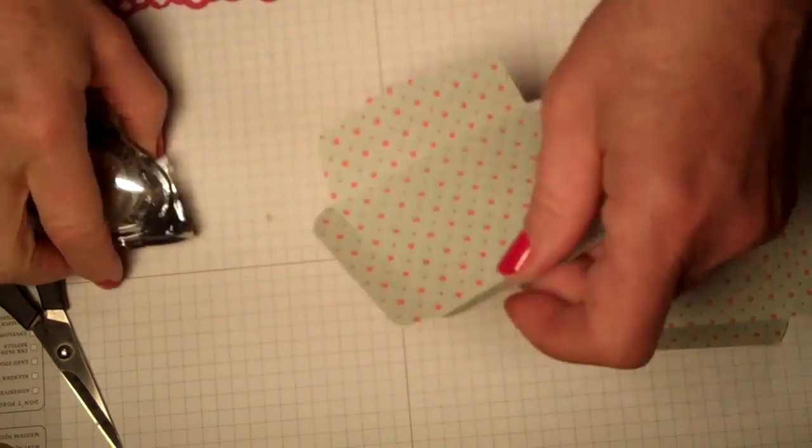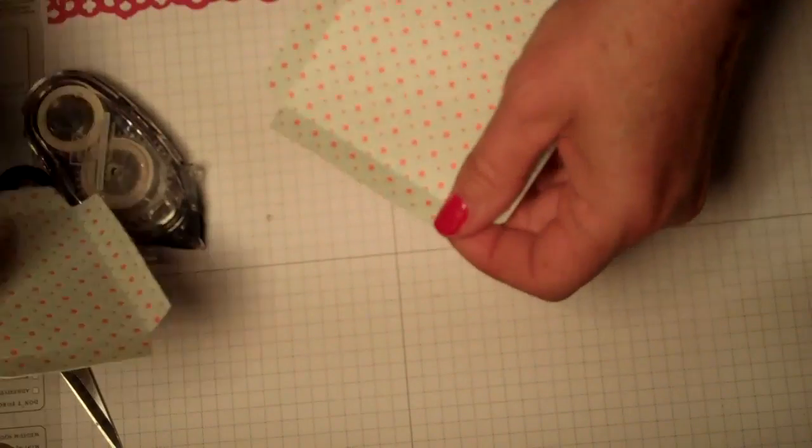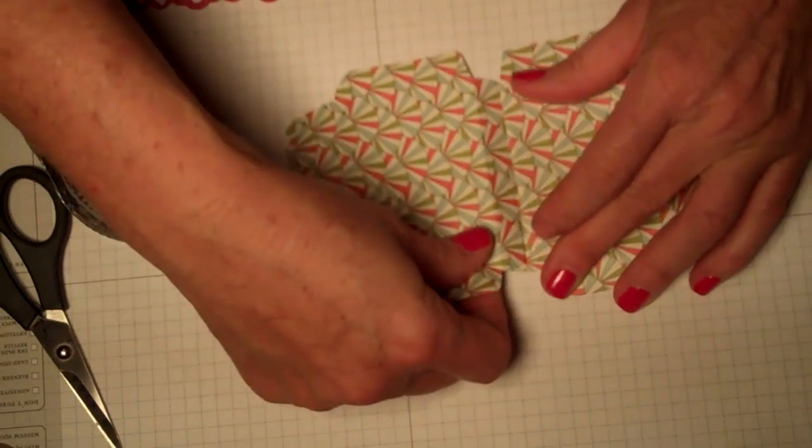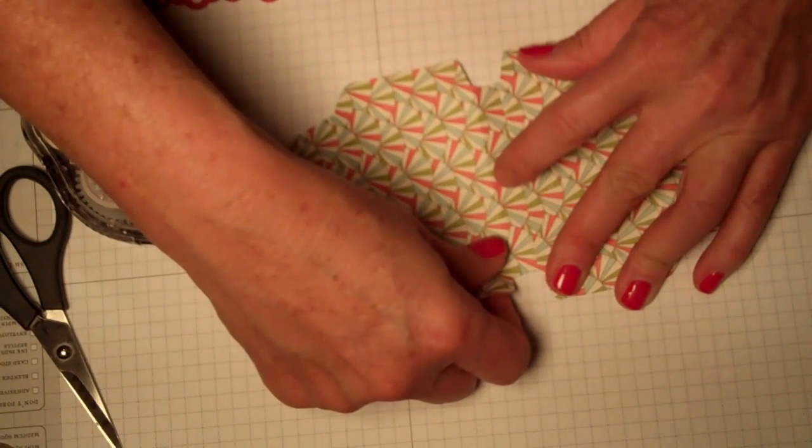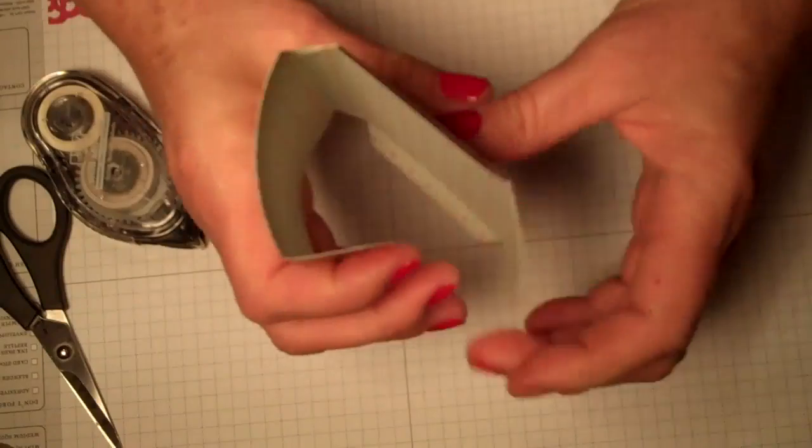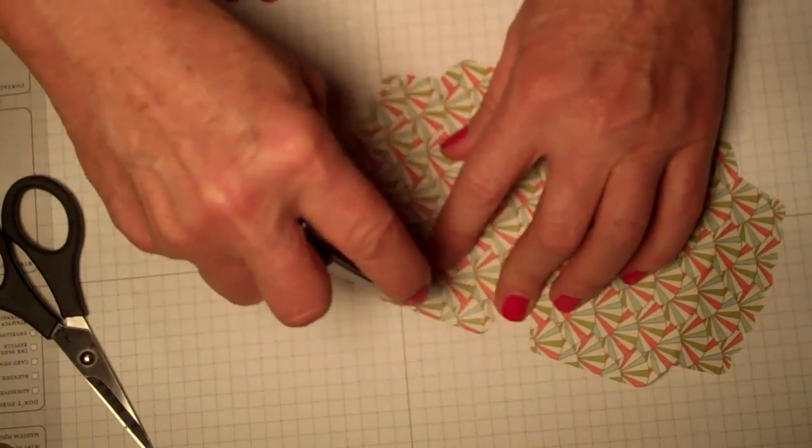Okay, so the next step is to line up the score lines. Okay, see how I did that? Then we're gonna do the same on the sides.